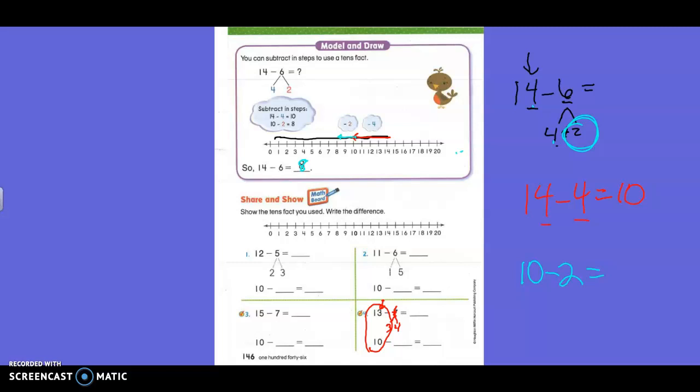Because we talked about, remember, 13 minus 3. Whenever we have this number and this number as the same, we're always getting 10, right? So we have 13 minus 3 equals 10. But then we're not done there, are we? What number do we have left still? 4. Now we have to go 10 minus 4. Write it down. 10 minus 4. What is 10 minus 4? 6. So then, since we got 6 here, you have to put 6 up here, too, for the answer.